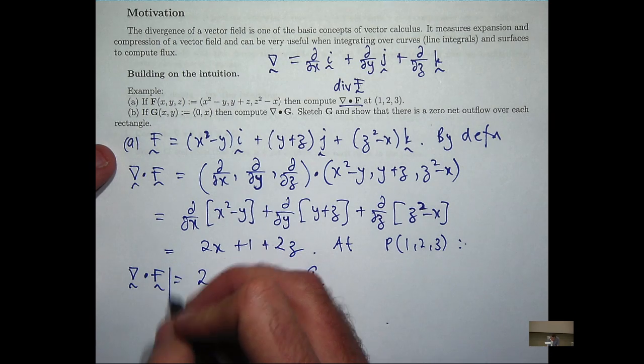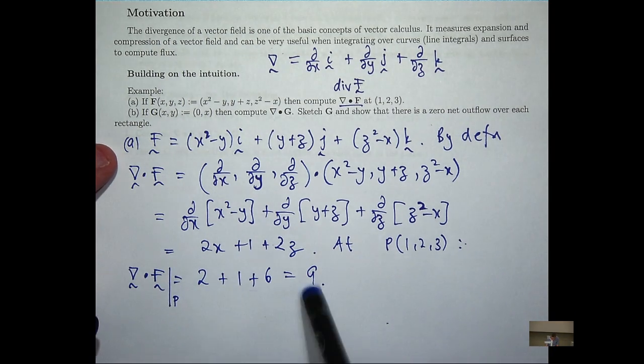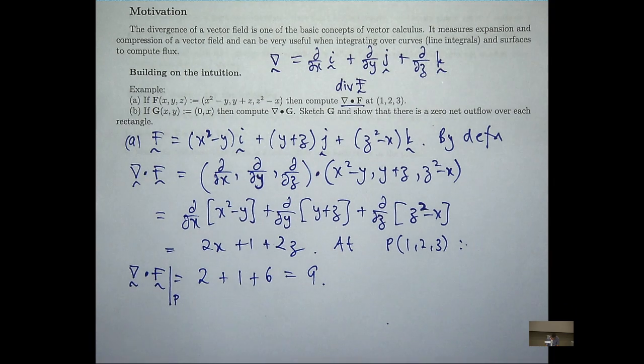If you want to make it obvious that we're evaluating this at a point, then you can have this little vertical line. Now, notice that when we calculated the divergence, we got 2x + 1 + 2z. Not a vector, not a vector. We started with a vector. The divergence gives us a scalar, a real valued function. And then we evaluate that function at a point. It gives us a number, not a vector.